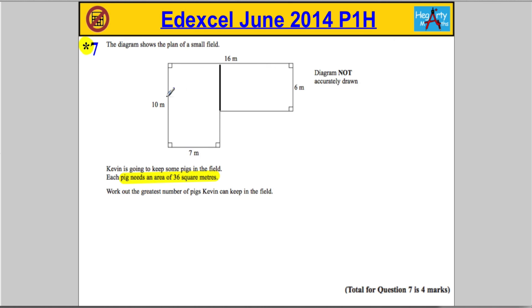So this rectangle here is going to have an area of 10 times 7, which is 70 metres squared. And then this rectangle here—be very, very careful—it's not 16 times 6.